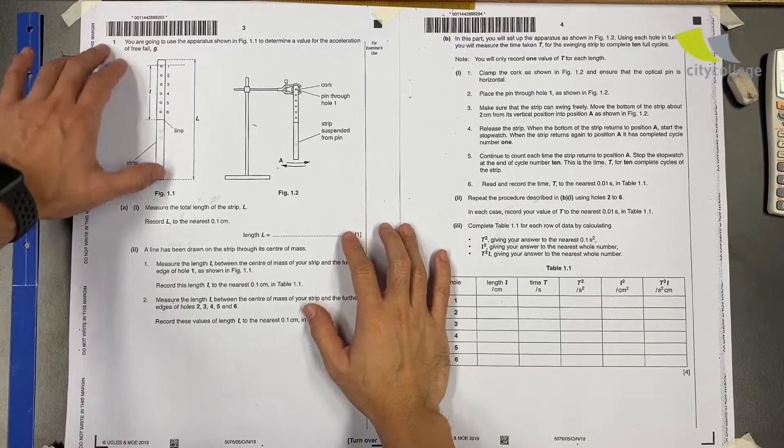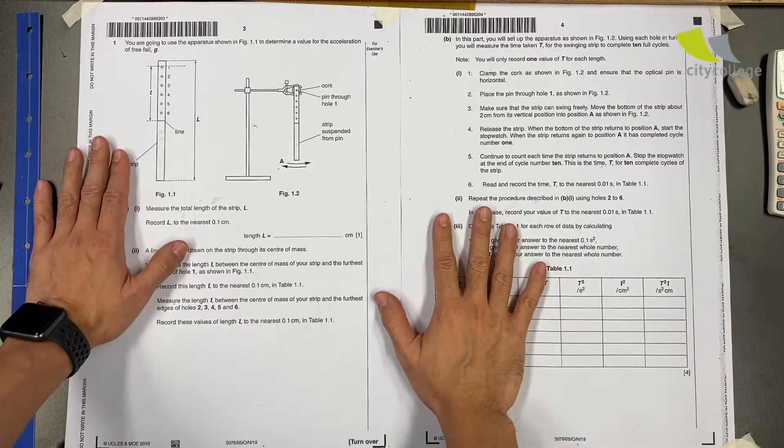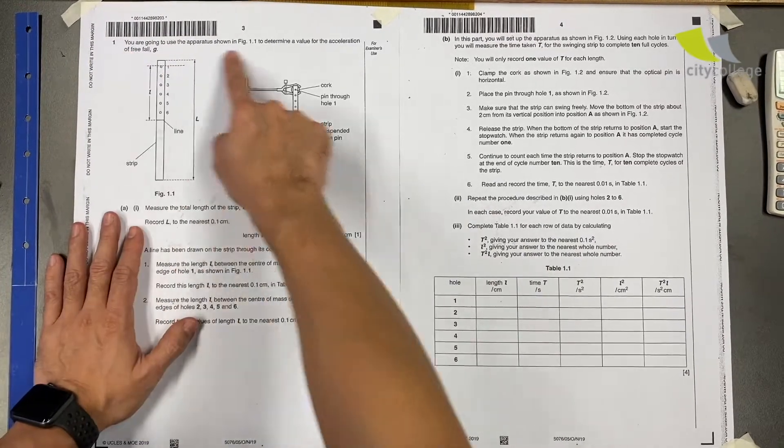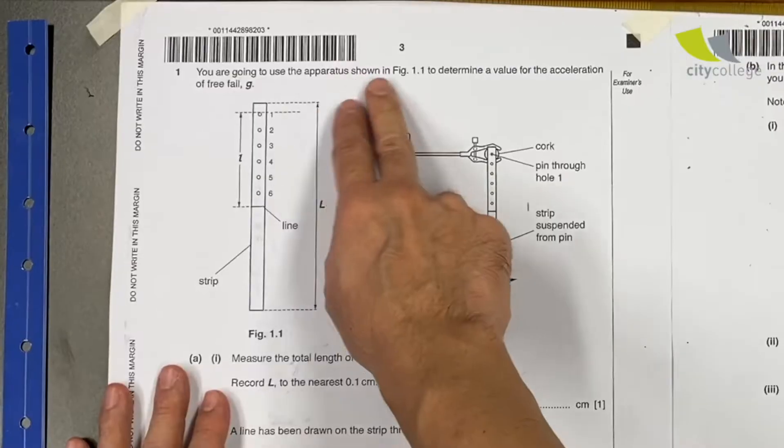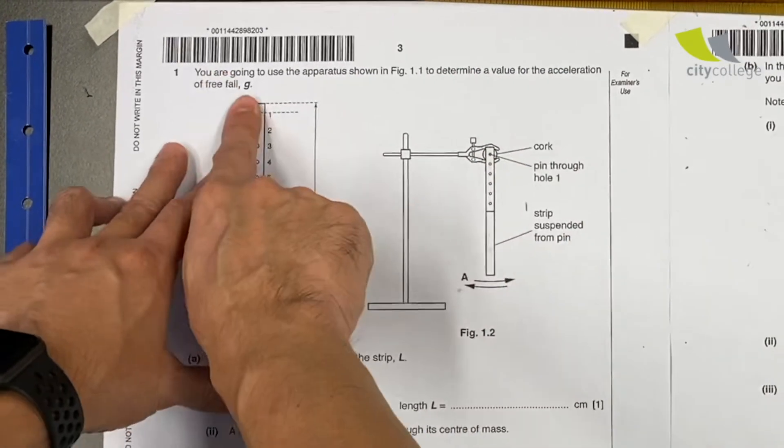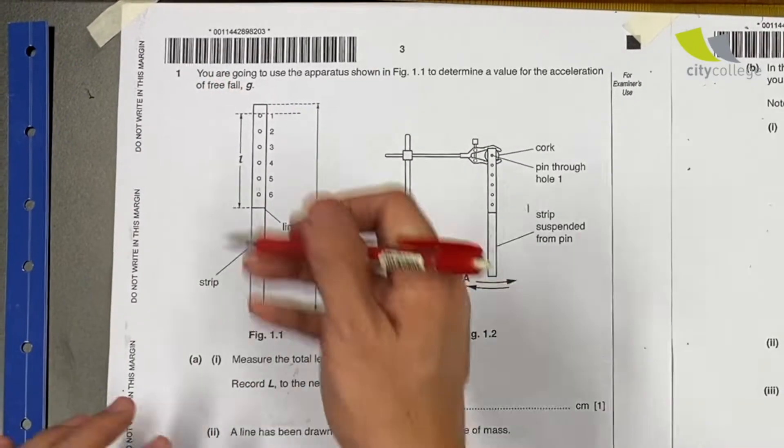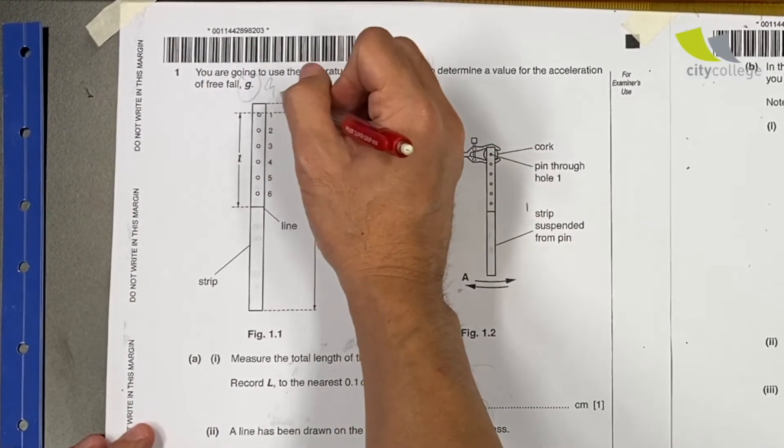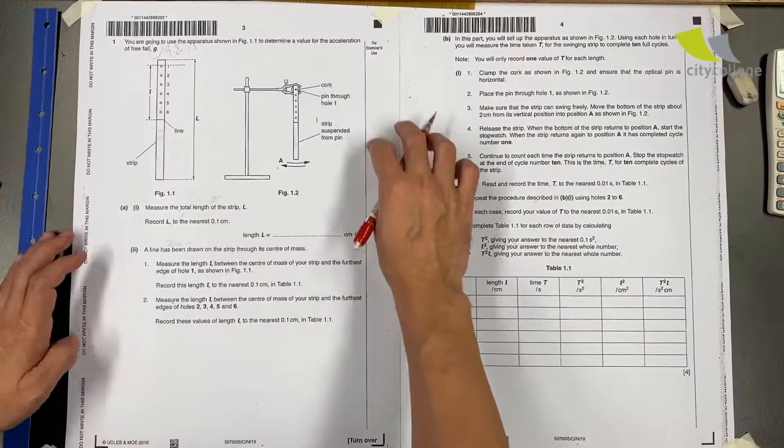Alright, we are doing the 2019 Combined Science Practical paper. Let's read the question quickly. We are going to use the apparatus shown in figure 1.1 to determine a value for acceleration of G. The good thing about this is we already know G is about 9.8 to 10, so that will help you check your answer later.